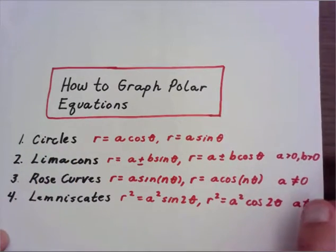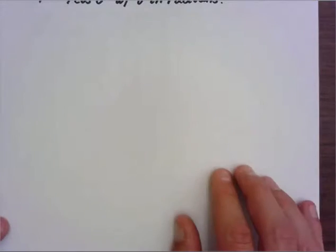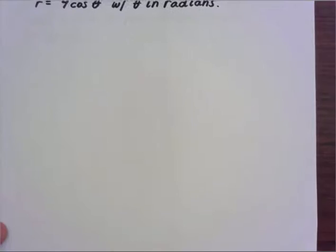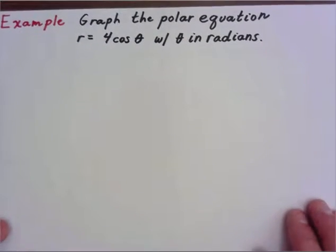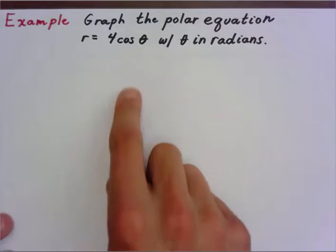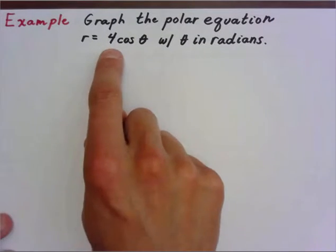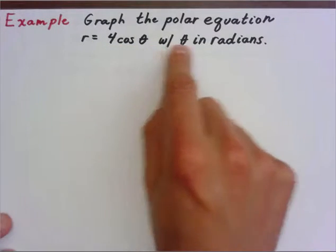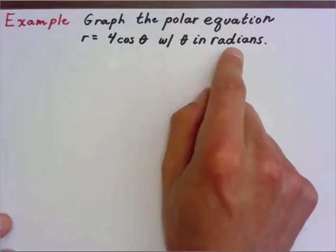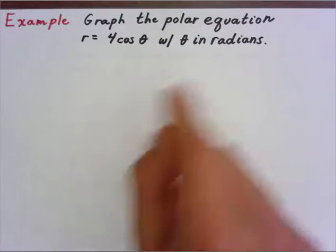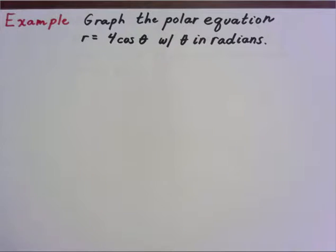Let's go ahead and look at our first example and graph the polar equation r equals four cosine theta, with theta in radians. There are a couple ways we can do this. The idea here is I'm going to look at multiples.